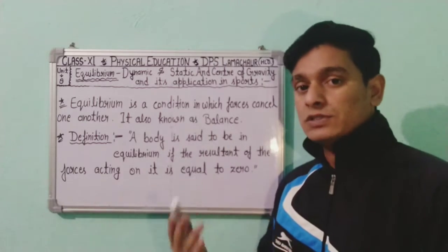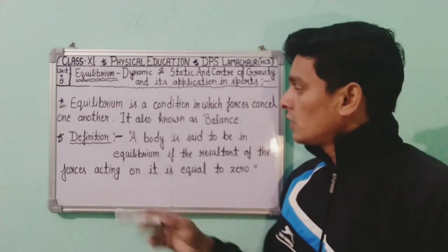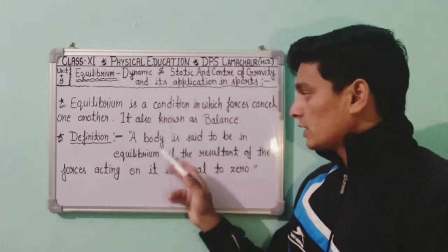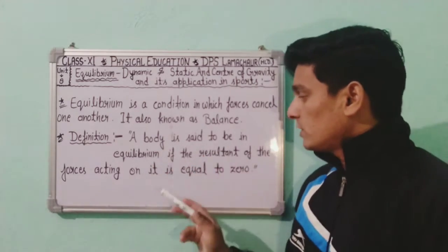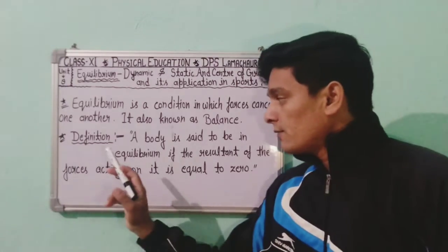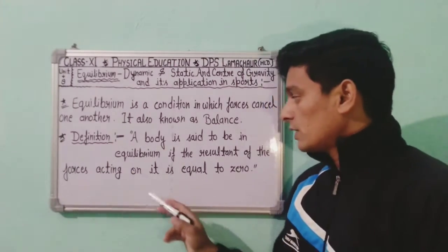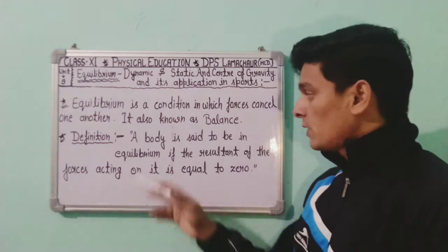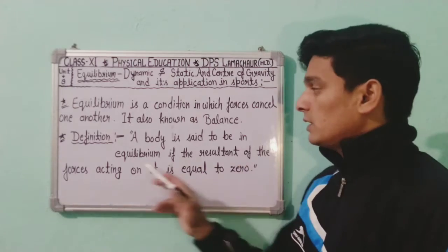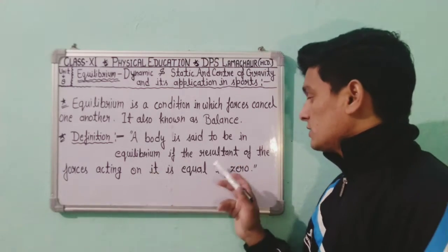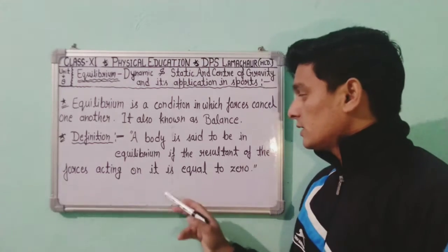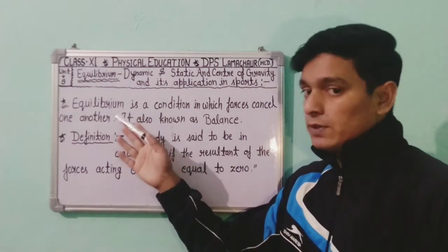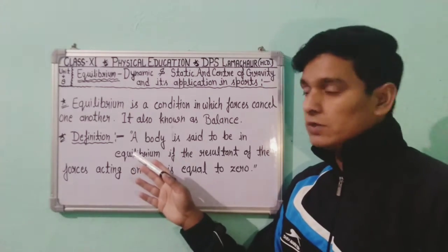Now let's know the definition of Equilibrium. A body is said to be in Equilibrium if the resultant of the forces acting on it is equal to zero. This is the definition of Equilibrium.